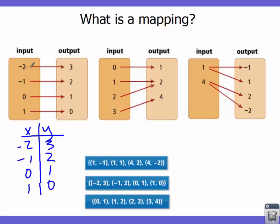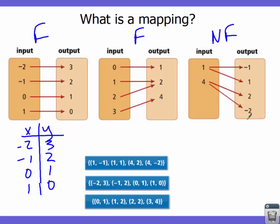Looking at the first mapping: each x value maps to only one y value, so yes, it is a function. In the second mapping we have 0→1, 1→2, 2→2, 3→4. This is also a function — different x values can map to the same y value; you just can't have one x value mapped to two different y values. The third mapping has 1 mapped to both negative 1 and positive 1, and 4 mapped to both 2 and negative 2, so that is not a function.